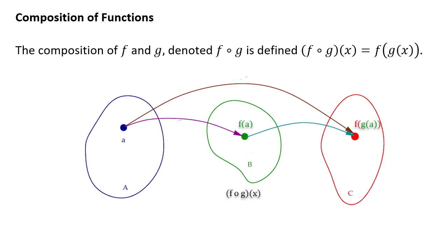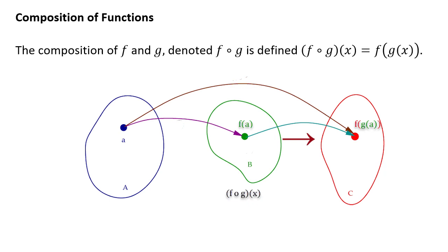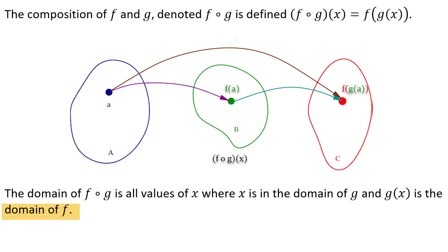The composition of functions: the composition of function f and function g, denoted f circle g, is defined as f circle g of x equals f of g of x. You feed a value into g first, and g kicks out an output, which then becomes the input into f, giving f of g of a. The domain of f composed with g is all values of x where x is in the domain of g, and g of x, the output, is in the domain of f.